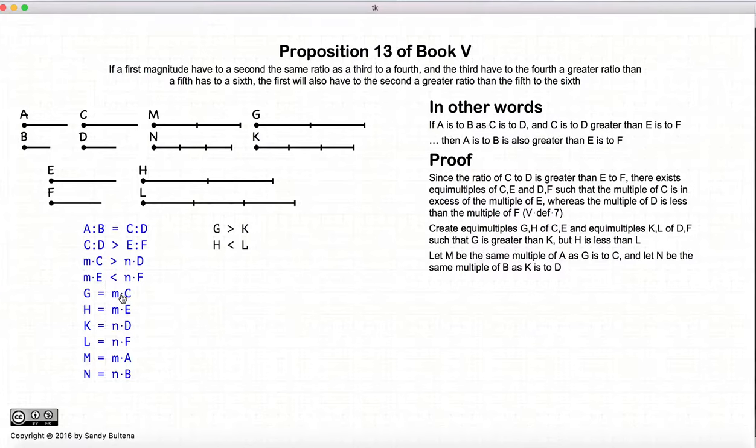So in other words, you can see we're using m multiples of m's and multiples of n's. So m, g, and h in this example are twice a, c, and e. n, k, and l are three times b, d, and f.